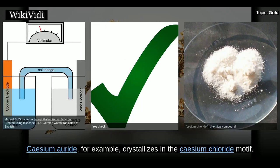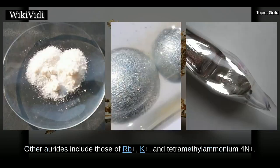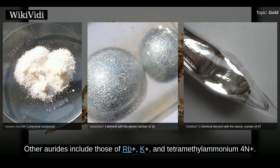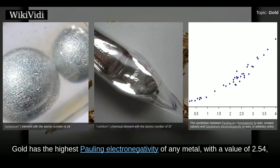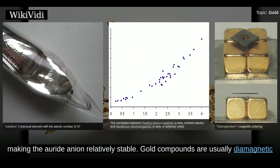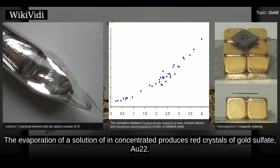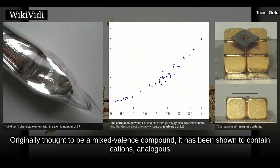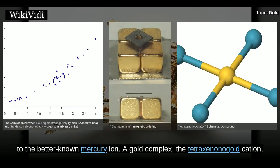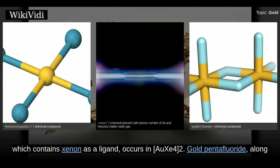The −1 oxidation state occurs in compounds containing the Au− anion, called aurides. Caesium auride, for example, crystallizes in the cesium chloride motif. Other aurides include those of rubidium, potassium and tetramethylammonium. Gold has the highest Pauling electronegativity of any metal, with a value of 2.54, making the auride anion relatively stable. Gold compounds are usually diamagnetic. The evaporation of a solution of concentrated gold sulfate produces red crystals of Au2(SO4). Originally thought to be a mixed valence compound, it has been shown to contain cations analogous to the mercury ion. A gold complex, the tetraxenon gold cation, which contains xenon as a ligand, also occurs.